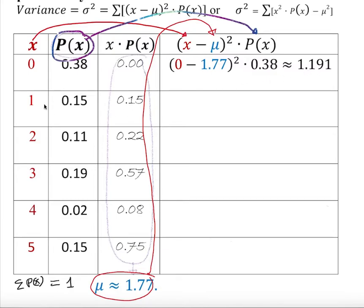1 minus 1.77 squared times 0.15. So let's take a look here. We can do the same thing on this one. And this is going to give me approximately 0.089.